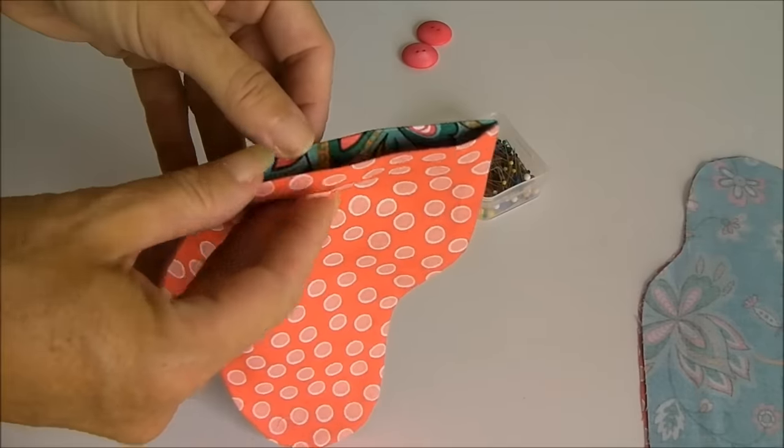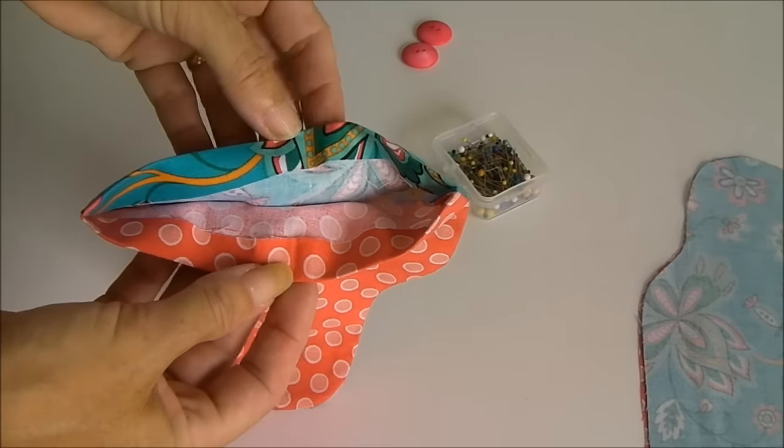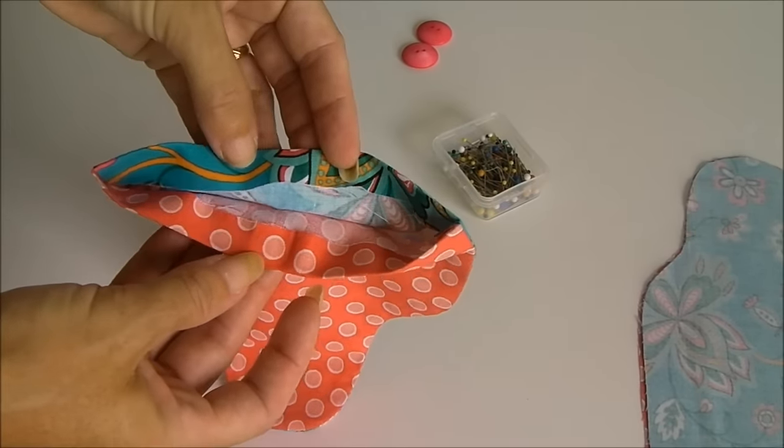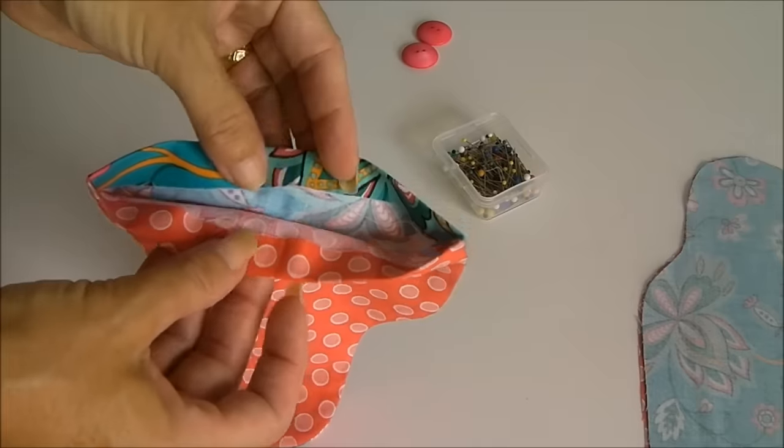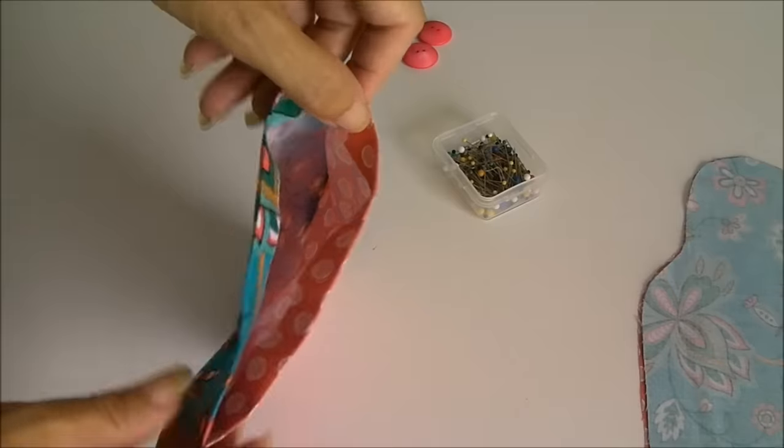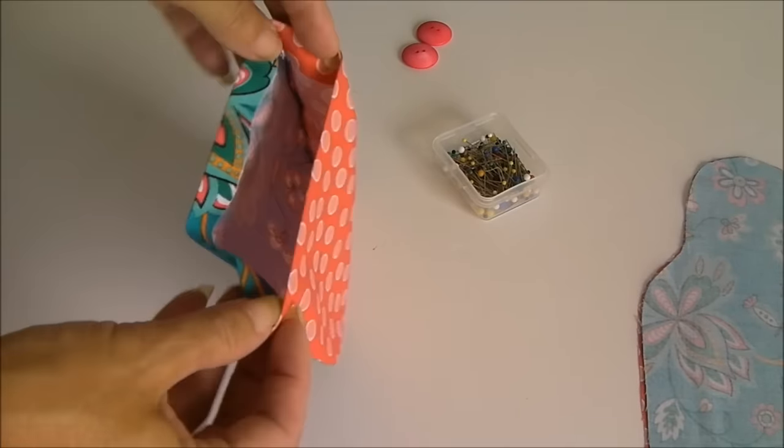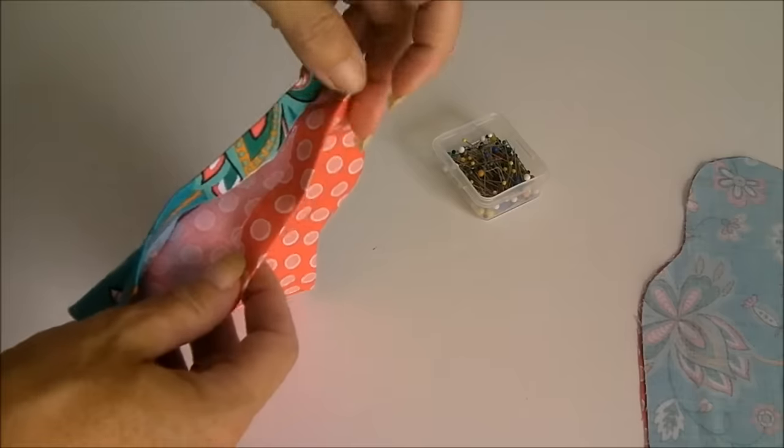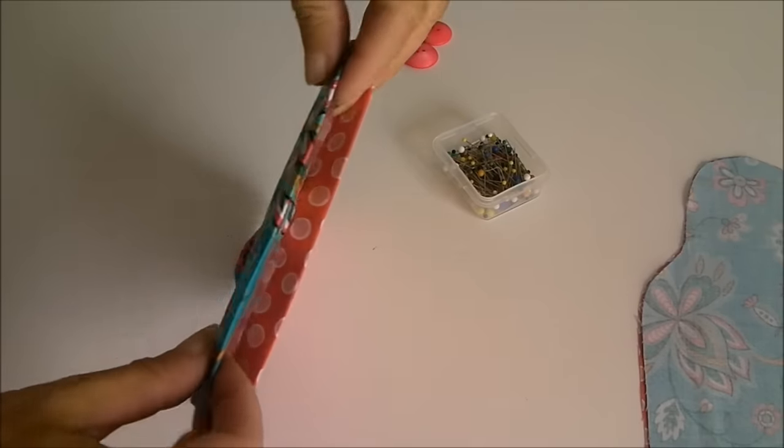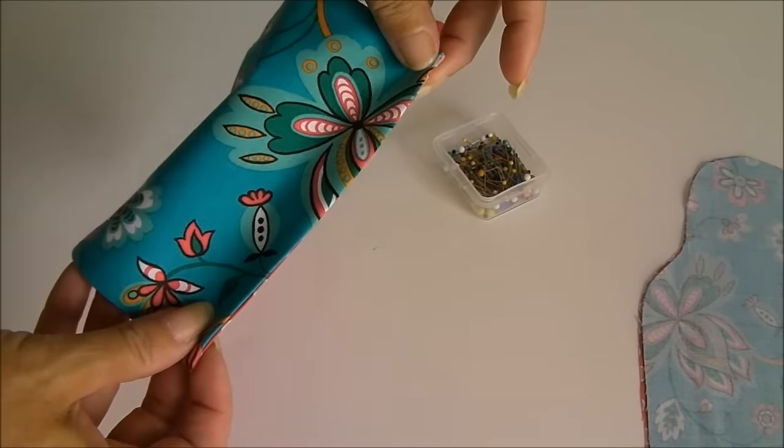And at the same time, where we have these raw edges at the bottom, I've turned in half an inch or so, it doesn't have to be an exact amount, and just pressed those nice and neatly too. And these raw edges are going to be turned to the inside and we'll have a look now at fitting the towel just in there.